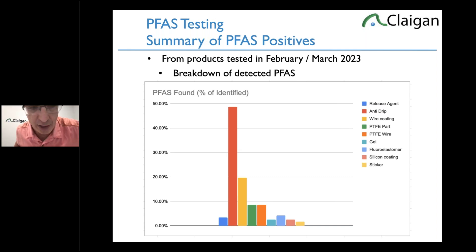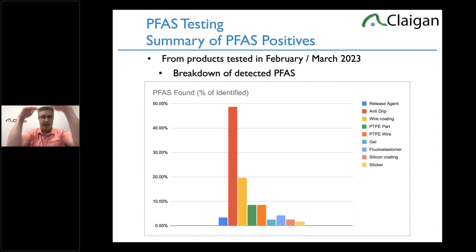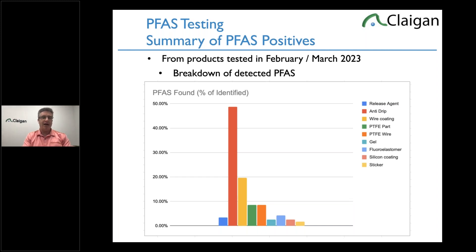When we look at the positives we got on individual parts broken down to 100% — probably a pie chart would have been better — the two biggest categories are anti-drip and wire coating. Everybody says 'I don't have PTFE wires,' but no, that's the fifth one. This is an anti-friction coating inside your wires. Those are the two most common. You might ask 'what's anti-drip? Is it related to water?' It's actually related to flame retardancy.